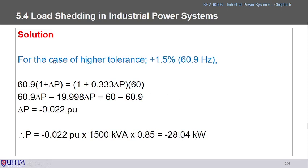For the higher tolerance case (+1.5%), frequency rises to 60.9 Hz. ΔP becomes negative, meaning load restoration is required — 28.04 kW of loads need to be restored.